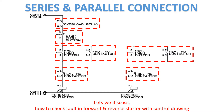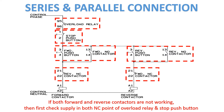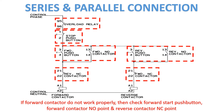Now let's discuss how to check faults in the forward and reverse starter using the control drawing. If both forward and reverse contactors are not working, first check the supply at both NC points of the overload relay and stop push button. If the forward contactor does not work properly, check the forward start push button, forward contactor NO point, and reverse contactor NC point.